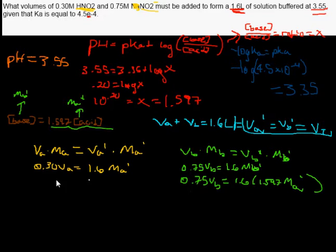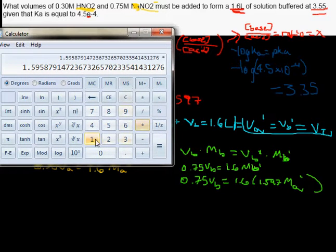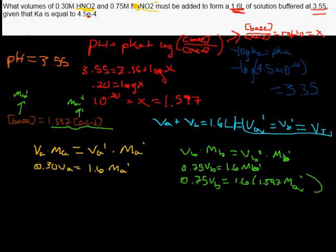So let's solve for the volume of both now. So let's start off here. Actually, let's start off here, because we still need to simplify this. So that times 1.6 gives us 2.55, right? Then divide both sides by 0.75, gives us 3.4. Let's go ahead and say 3.41, because that's what my calculator says.